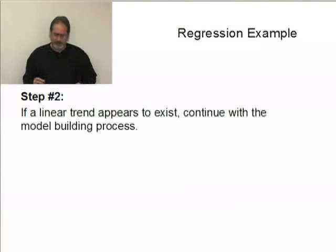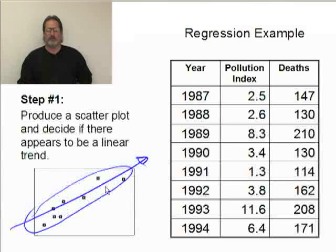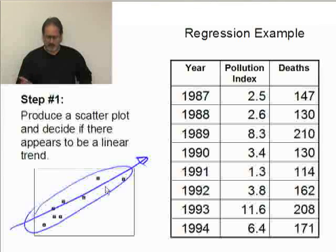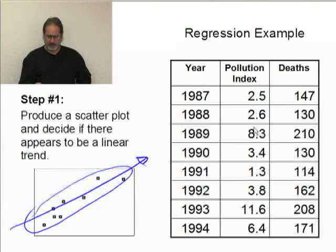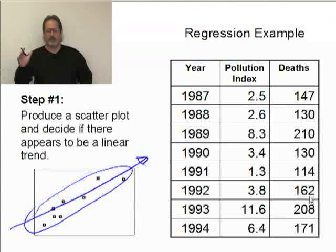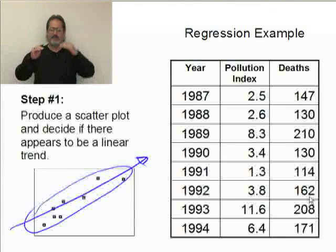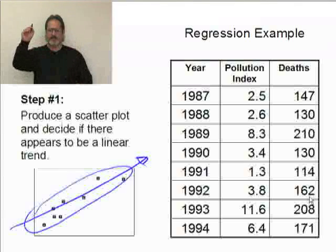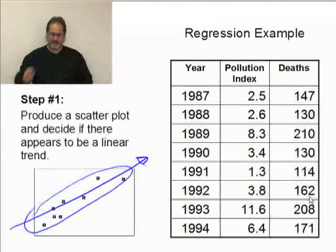I'm going to start off with a hypothesis test, because when we looked at the scatterplot, what we saw was a linear trend. As soon as I started talking about pollution index and the deaths of fish, what you would expect to happen is as the pollution index increases, you'd expect to see the number of dead fish to also increase. So you expect to see some type of positive linear trend.